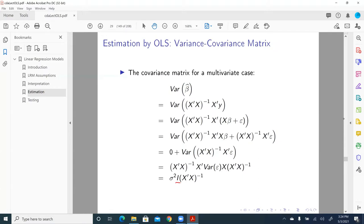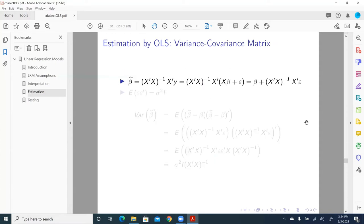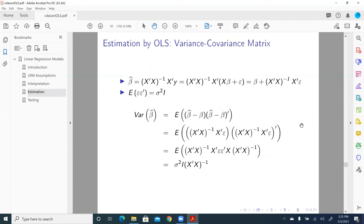And that identity matrix has a dimension of what? K by K. And so this is another way to derive the variance covariance matrix of beta hat, or the variance covariance matrix of the OLS estimator.